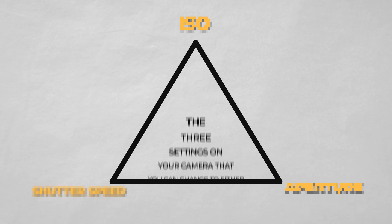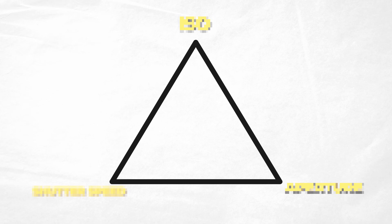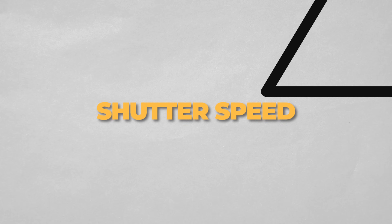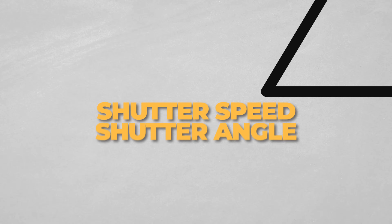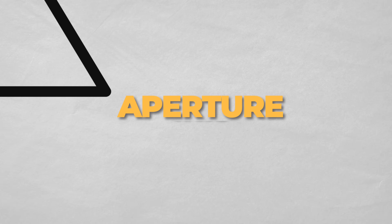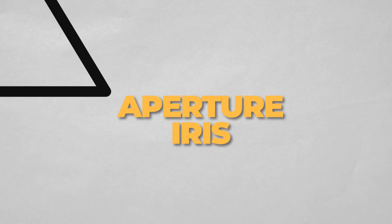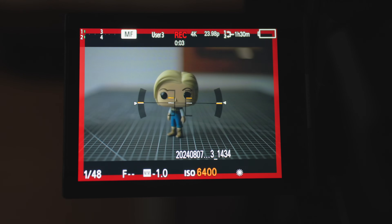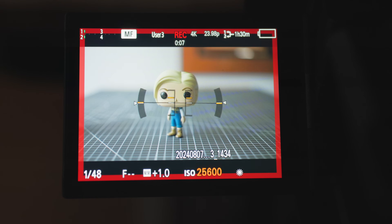When I say exposure, what I'm talking about is how bright or dark the image is. These settings are shutter speed — also known as shutter angle in videography — and then we have aperture, also known as iris, and then we have ISO. ISO boosts the exposure of the image digitally, which can be really handy if you need to make things brighter, but the more you boost it, the more noisy the image can get.